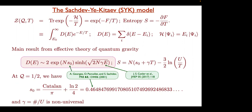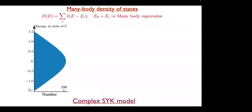Let me show a few pictures. If I take, say, 16 sites, I have 2^16 eigenvalues. I bin them into tiny bins and this is the count — the density of states, D(E). This is what it looks like numerically.